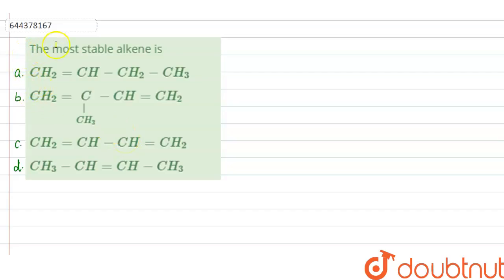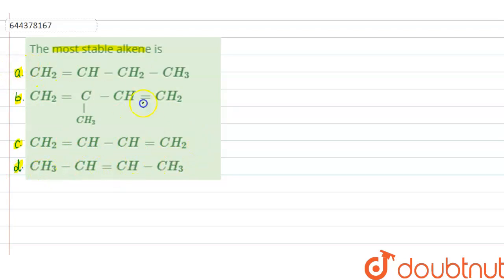The question says: the most stable alkene is — option A: CH2=CH-CH2-CH3, option B: CH2=C(CH3)-CH=CH2, option C: CH2=CH-CH=CH2, and option D: CH3-CH=CH-CH3. So in this question four alkenes are given and we have to find out the most stable alkene.